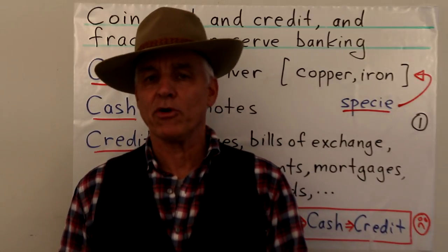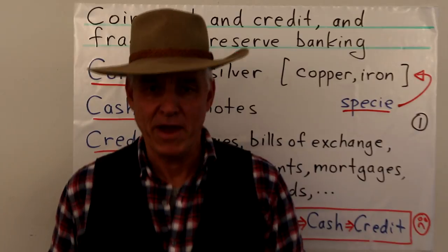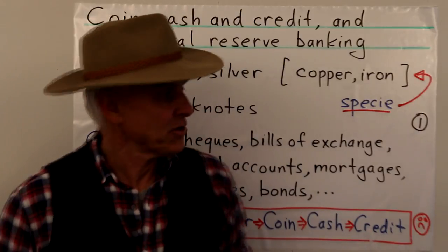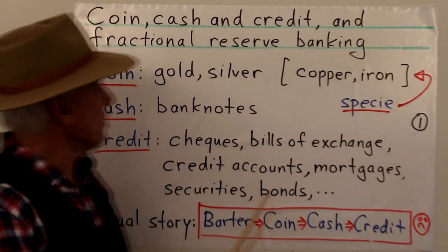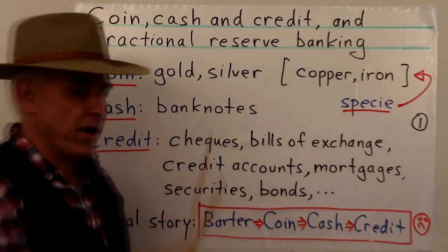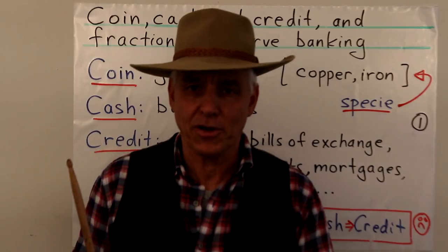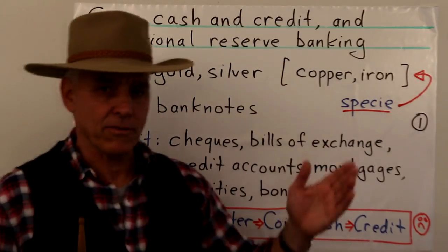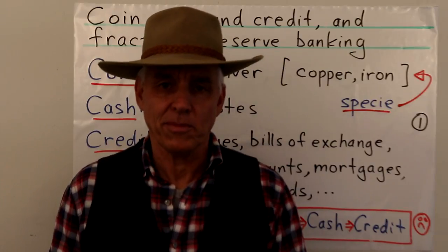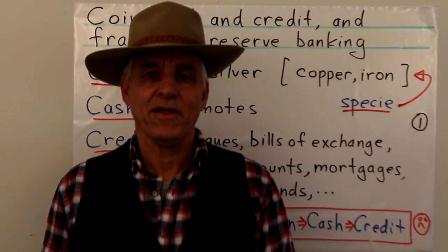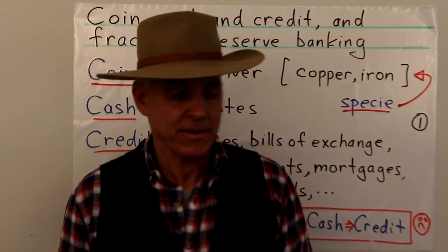Howdy, everyone. I'm Norman Wahlberger, mathematician turned banker. Today we're going to talk about money in a very broad kind of way. We're going to talk about coin, cash, and credit, and then move on to explaining how fractional reserve banking really works. I'll illustrate all that with a cool story about Slim and his hundred dollars that he brought into Little Cactus just when I was starting my bank.